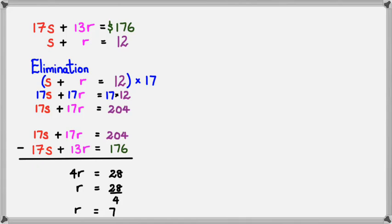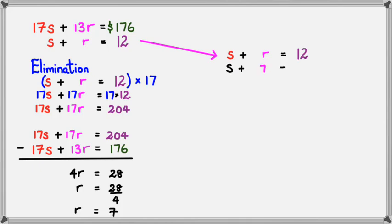This is the same result as the substitution method. Once we have Riva who worked 7 hours, we go back to the easiest equation: S plus R equals 12. Since R equals 7, we get S plus 7 equals 12, and rearranging, S equals 12 minus 7, which is 5.